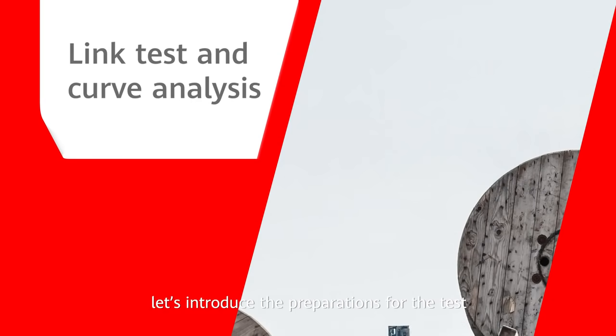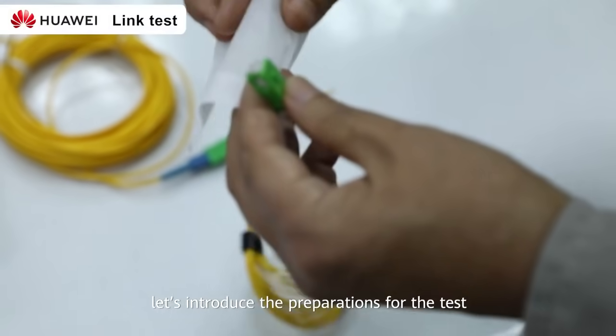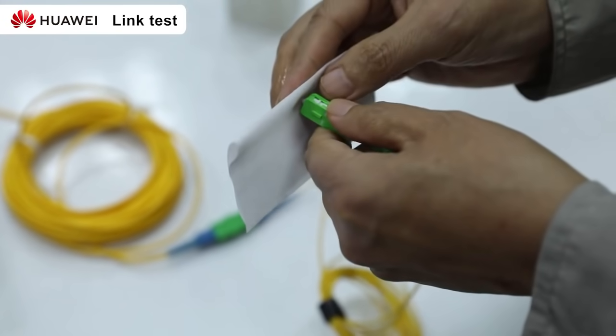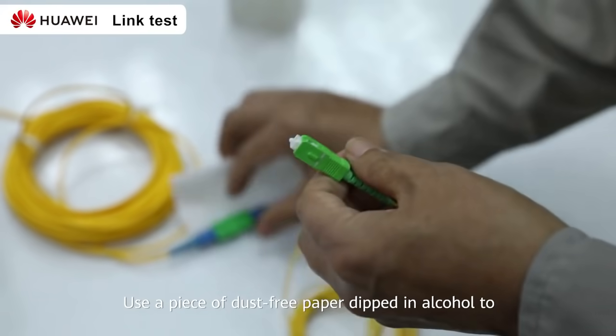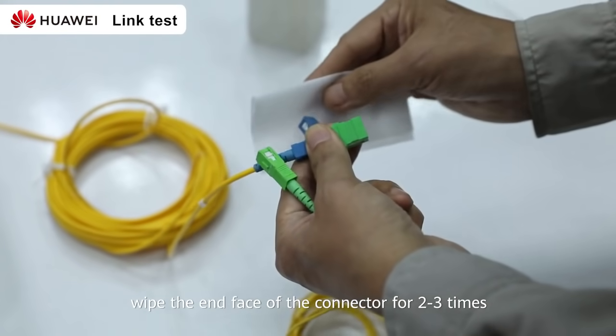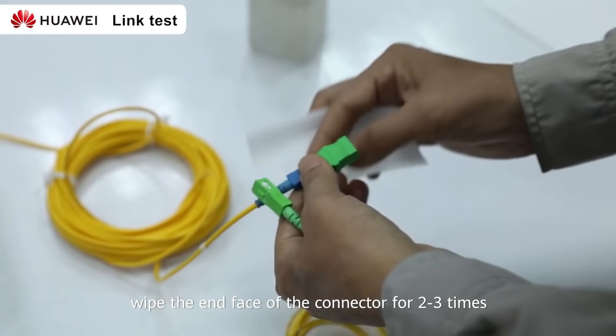Now let's introduce the preparations for the test. Clean the end surface of the test fiber. Use a piece of dust-free paper dipped in alcohol to wipe the end of the connector two to three times.